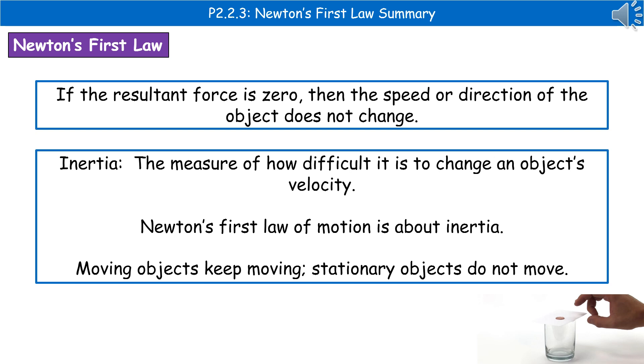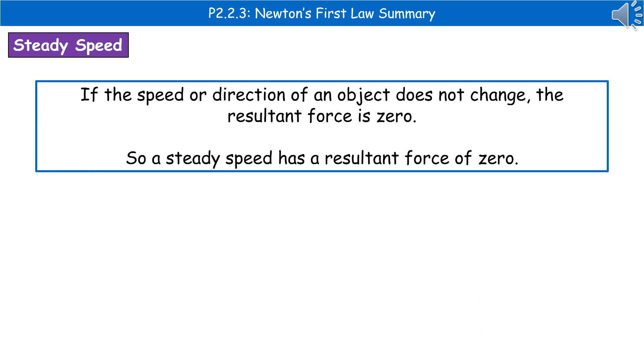Because what we're actually saying is that a moving object keeps moving and a stationary object doesn't move, unless of course there's something that's going to unbalance those forces. If we've got an object that's moving at a steady speed, it's got a resultant force of zero, because the speed and the direction isn't changing.